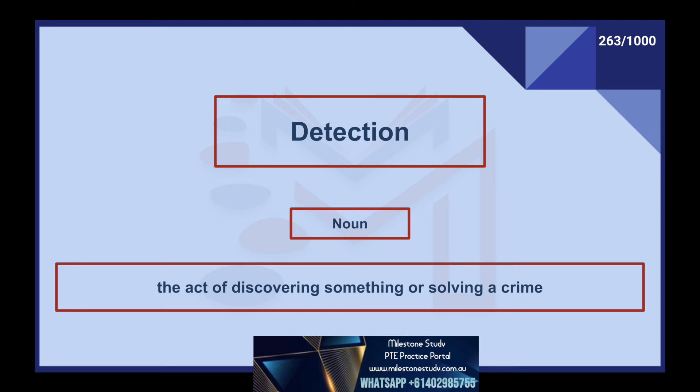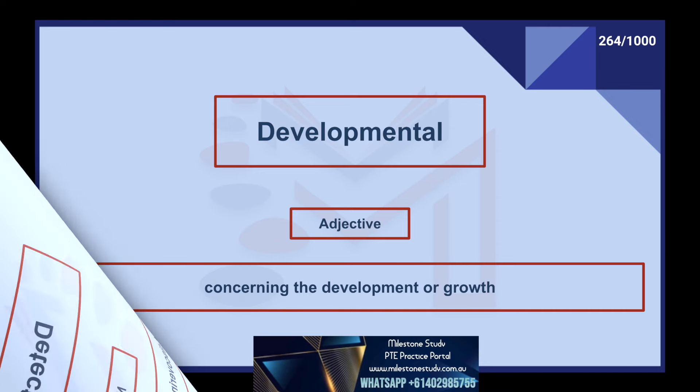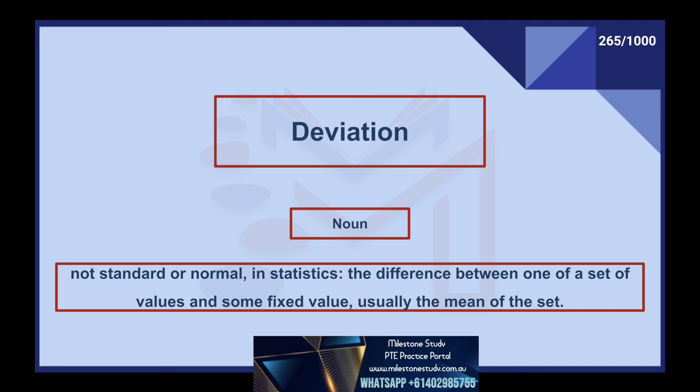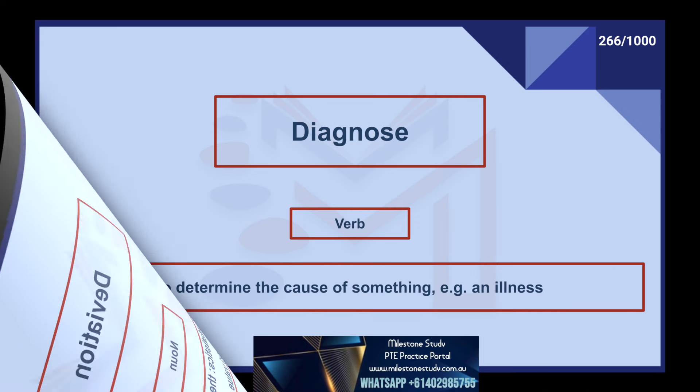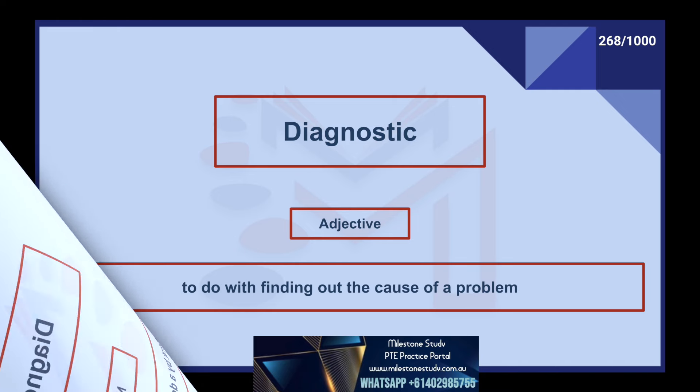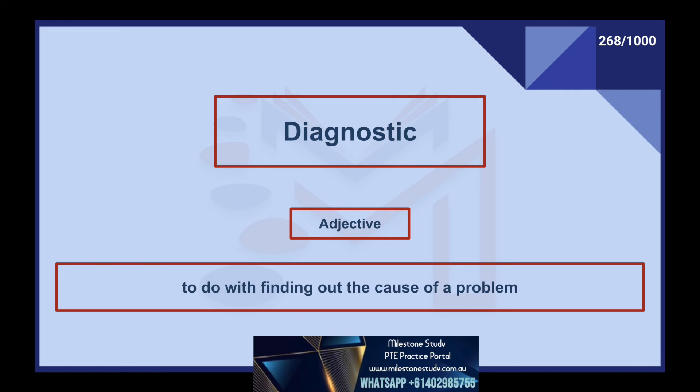Detection, noun: the act of discovering something or solving a crime. Developmental, adjective: concerning the development or growth. Deviation, noun: not standard or normal. In statistics, the difference between one of a set of values and some fixed value, usually the mean of the set. Diagnose, verb: to determine the cause of something, e.g. an illness. Diagnosis, noun: a judgment by a doctor about a person's illness. Diagnostic, adjective: to do with finding out the cause of a problem.